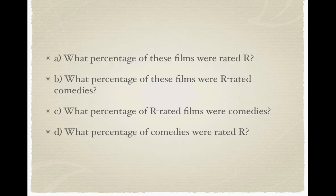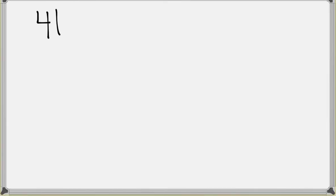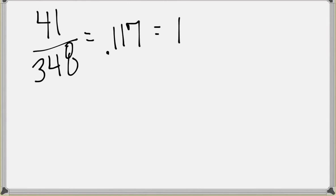The next question: what percentage of these films were R-rated comedies? Again, we're looking at the total 348 movies, and we want to know what percentage were R-rated comedies. We look at the cross section where comedy and R meet — the total number of R-rated comedies is 41. So 41 out of 348 gives us approximately 0.117, which is about 11.7% of the movies in 2010 were R-rated comedies.